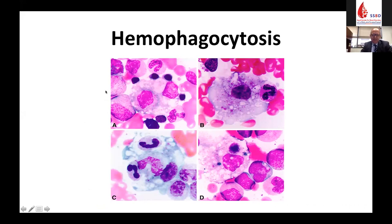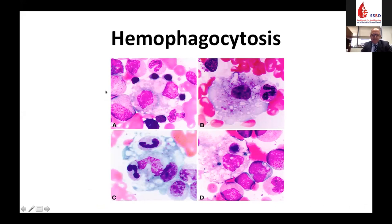Hemophagocytosis is part of the name — macrophages engulfing other cells within the bone marrow and other tissues. These are activated, very angry macrophages violating rules of personal space. However, this finding is neither sensitive nor specific for HLH; it can arise from many different conditions, but demonstrates the degree of inflammation present in HLH.